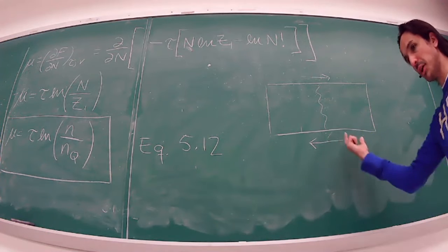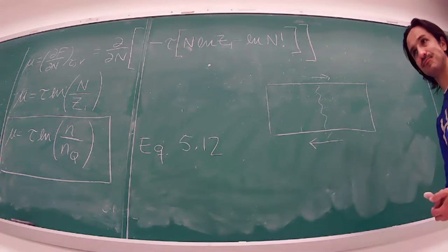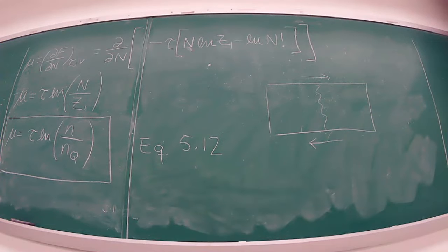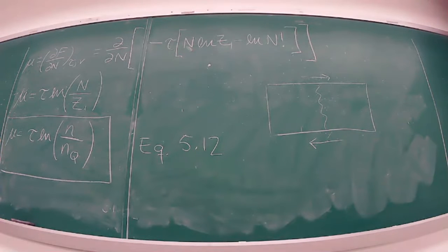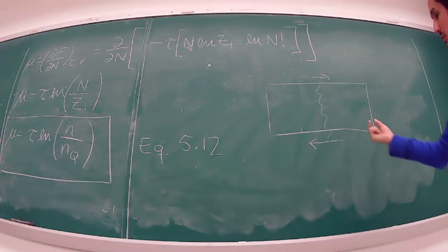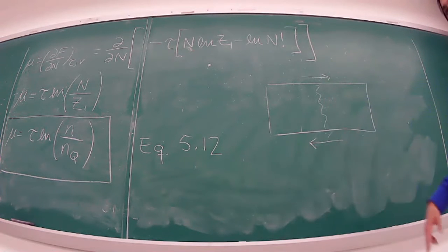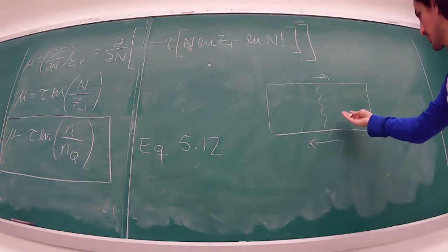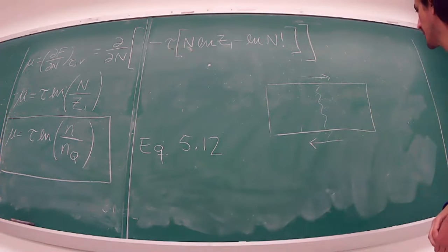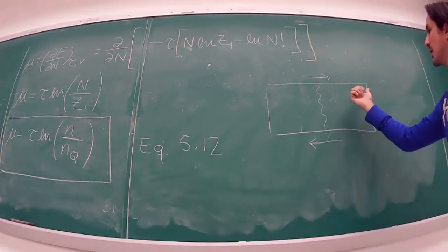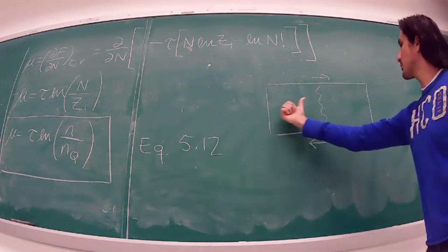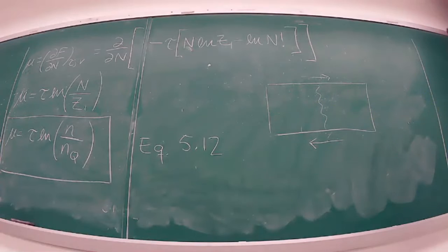In diffusive equilibrium, the number of particles moving in one direction equals the number moving in the other direction. Just like fluctuations in energy have a very narrow distribution, we also have fluctuations in particle number, but on average it is zero and the distribution is very narrow.